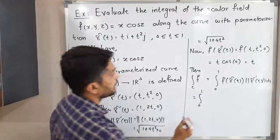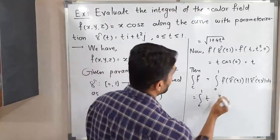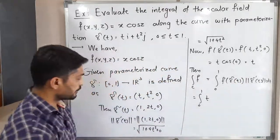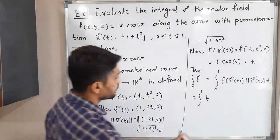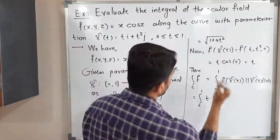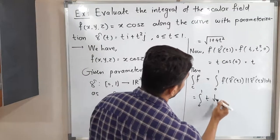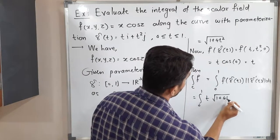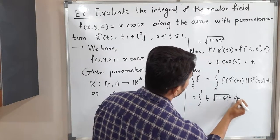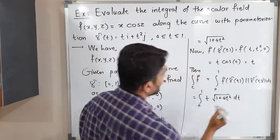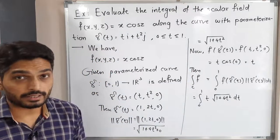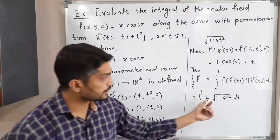Substituting our values, this becomes ∫₀¹ t·√(1 + 4t²) dt. We cannot solve this integration directly since a square root and a product are present, so we need a substitution.